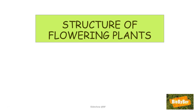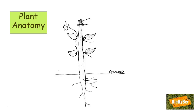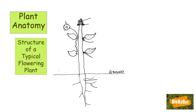When studying the structure of flowering plants, we are really studying plant anatomy. Anatomy is the study of the body — people in medicine and artists study anatomy. Here we are studying plant anatomy and learning how to draw it. Just as you would draw a human with a head, two arms, and two legs, here we're being asked to draw a typical flowering plant.